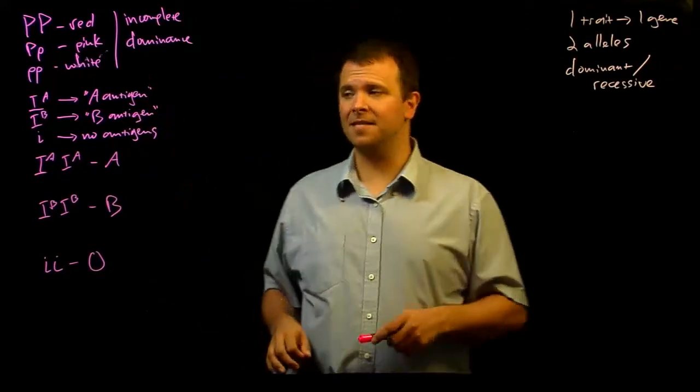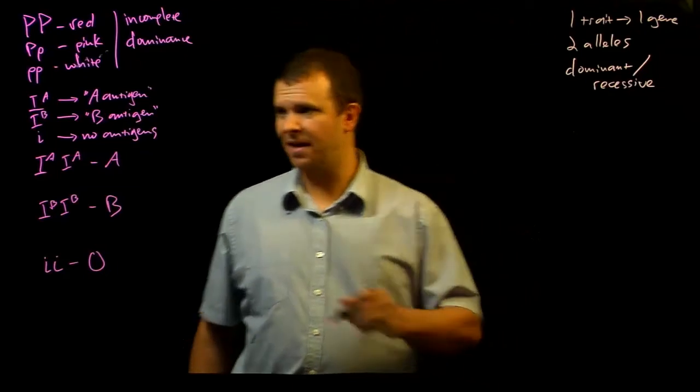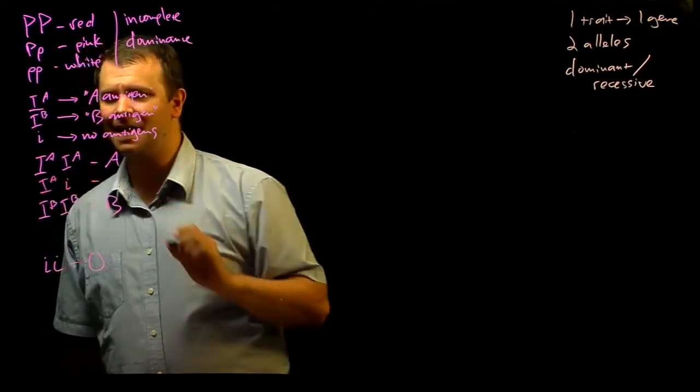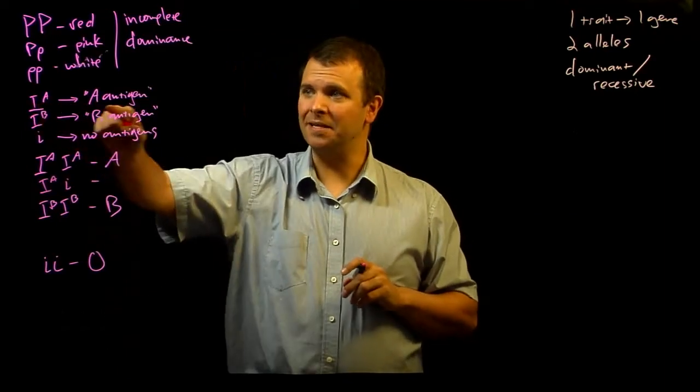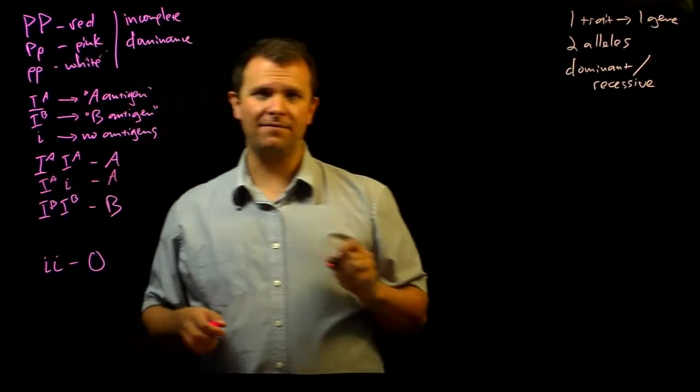It's also clear based on this molecular biology what some of the heterozygotes look like. If you are IA, little i, you have one allele that is making an enzyme that makes that A antigen. And so you'll have type A blood.